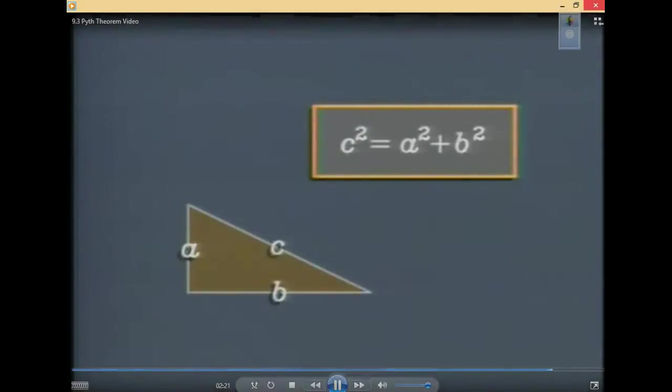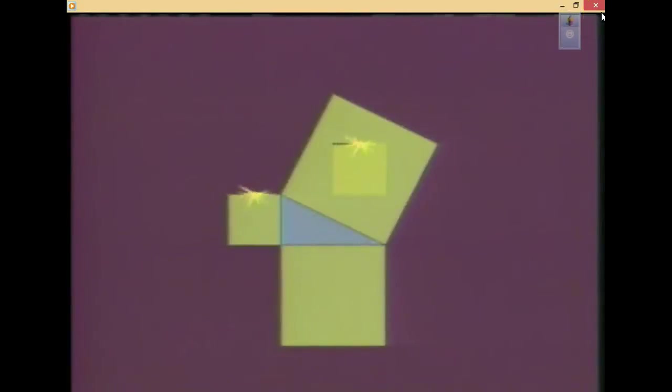Still not absolutely convinced? Make a copy of the small square... Here's another way. Make cuts along the sides and out to the edges, and rearrange the pieces. All the pieces from the big square fit exactly inside the other two squares.